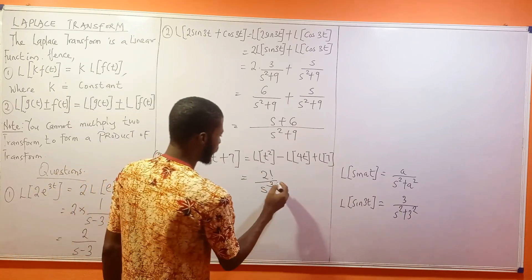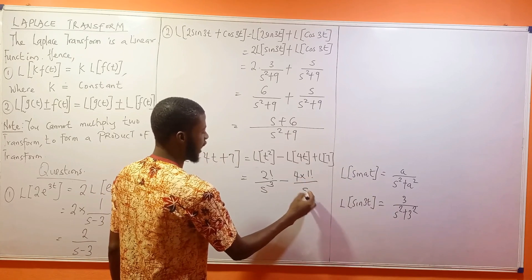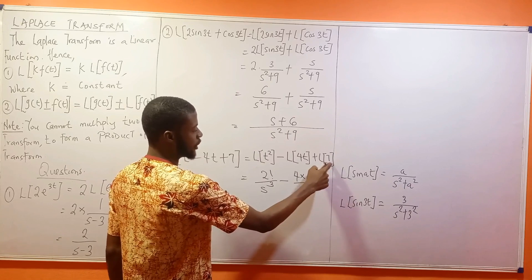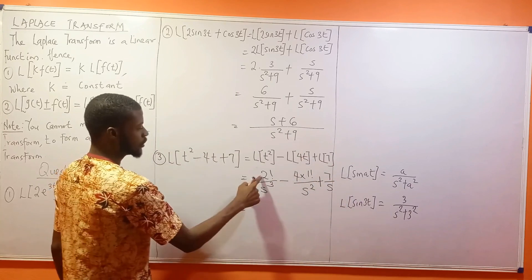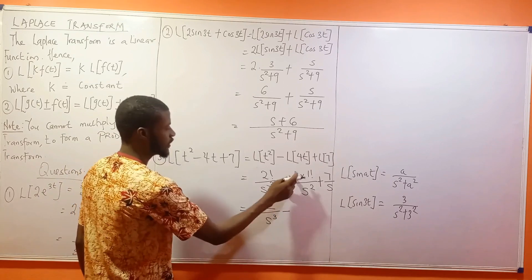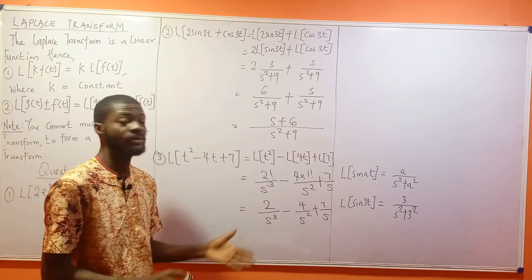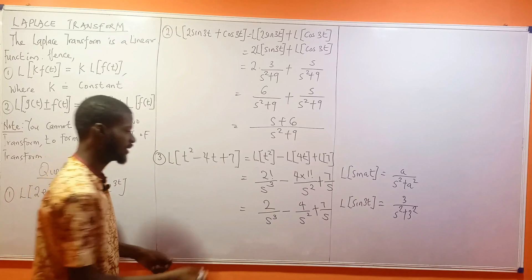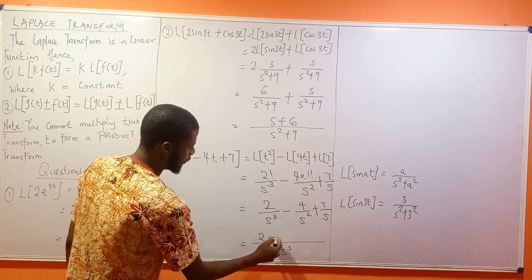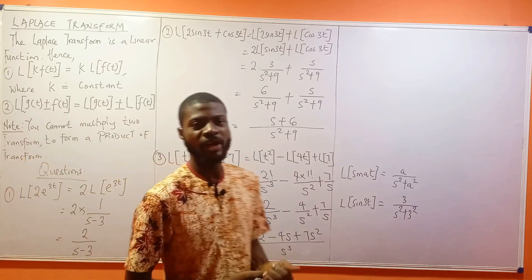The Laplace transform of 4t becomes 4 times 1!/s² which is 4/s², since 1+1=2. The Laplace transform of the constant 7 is 7/s. So 2! = 2, giving us 2/s³ minus 4/s² plus 7/s. Taking s³ as the LCD, this becomes (2 - 4s + 7s²) over s³. That is the final answer. Thank you very much for watching.